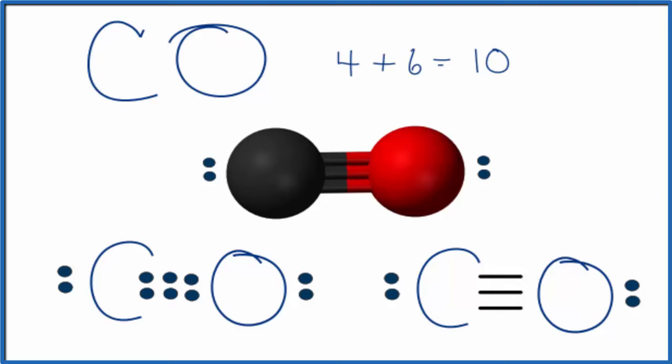If you wanted to look at the hybridization of the carbon here, since it's only attached to this oxygen here and in this lone pair, two things, we would have SP hybridization for the carbon here in carbon monoxide.